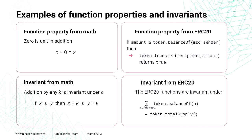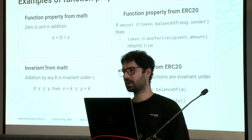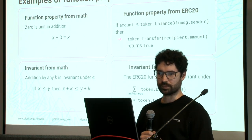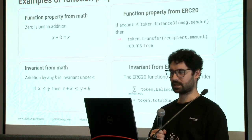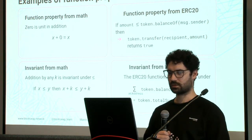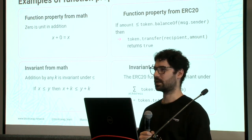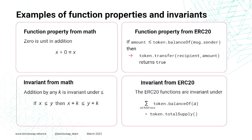An example of function properties and invariants: a function property from math is that zero is a unit of addition — x plus zero equals x. An example from the ERC20 contract is that if an amount is less than or equal to the balance of the sender, then the token transfer will always return true, assuming sufficient gas. An invariant from math is a relation that holds before and after a function. For example, if x ≤ y, then x + k ≤ y + k. An invariant from the ERC20 contract is that the sum of all balances of all addresses equals the total token supply.